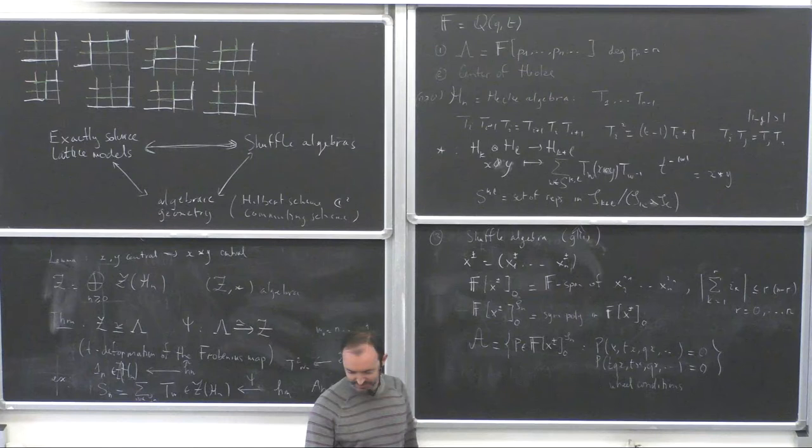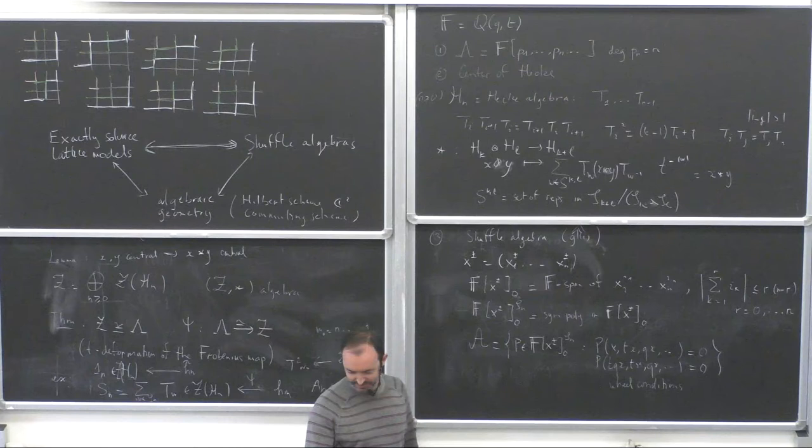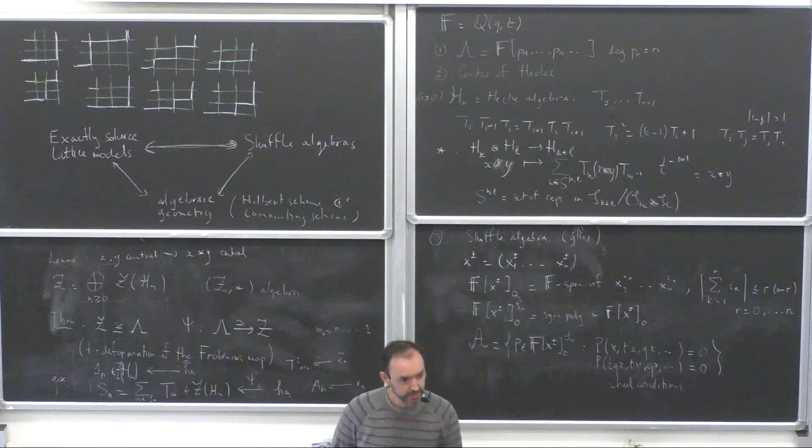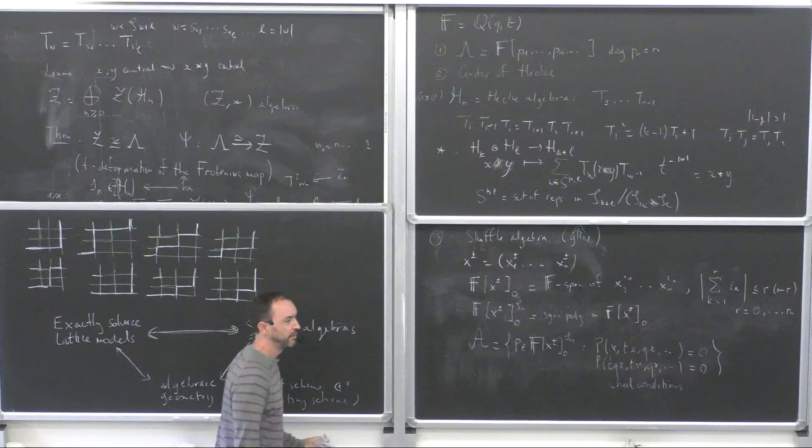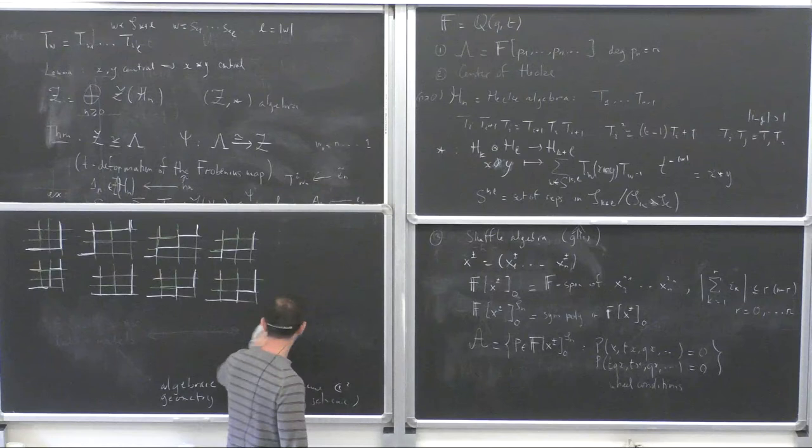For the six vertex model, there's only one parameter, so the wheel condition would be more like x, tx, t²x. That's one difference. The wheel conditions appear in a variety of contexts, but in this particular form they're related to our algebra.